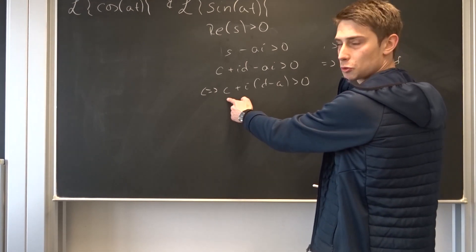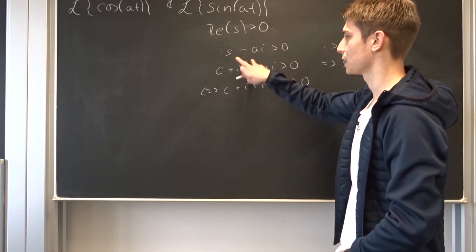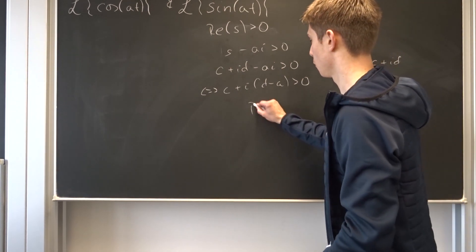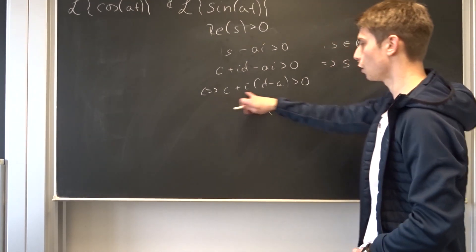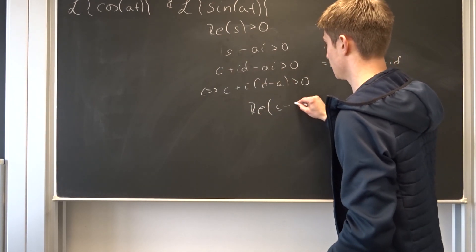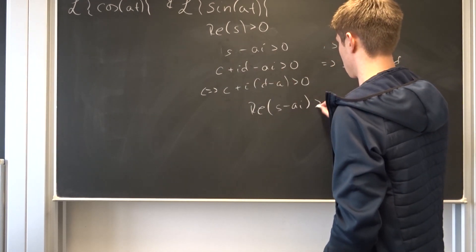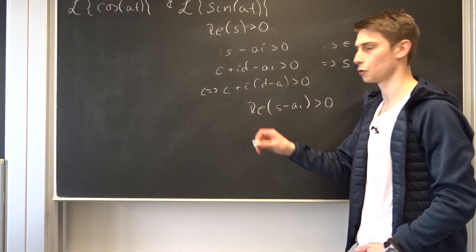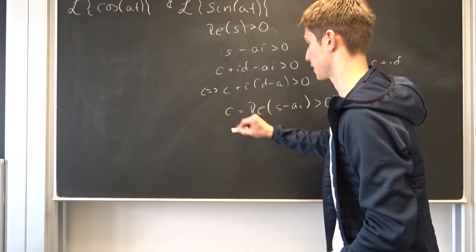And now we just want to take a look at the real part as always. So that would mean that this would converge for the real part of this whole thing, which is this whole thing right here. s minus a i, greater than zero. And we know that the real part now is just c right here.